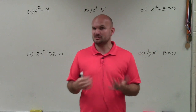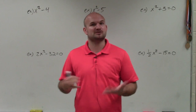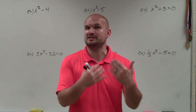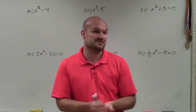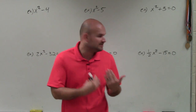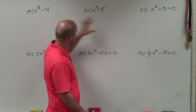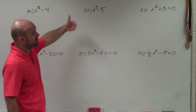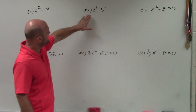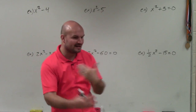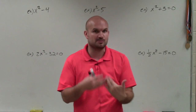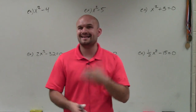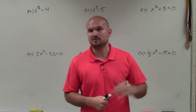Basically, the square root method is just like using inverse operations, but we're obviously going to be using the square root. That's really important, because in each of these examples we only have one variable x, and each time that x is squared. So by applying our inverse operations, we're first going to want to isolate the variable and then apply the square root.